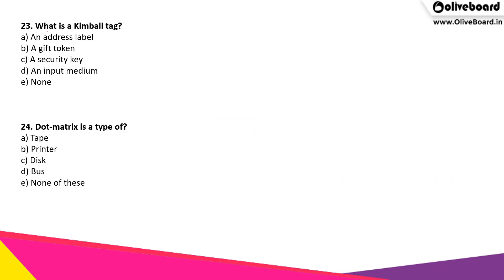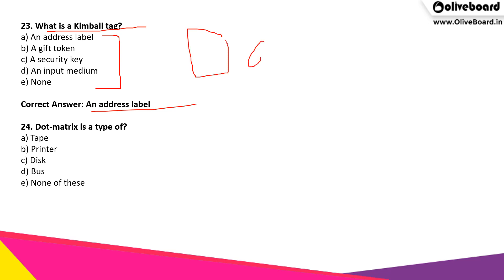What is a Kimball tag? One of the following is the correct answer, which is an address label. When we see QR codes, which are also labels for addresses — if we click a picture or try to scan the QR codes, we can go to an address; the same way, through Kimball tags, we can reach out to information. This was technology used many years ago.